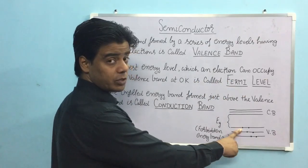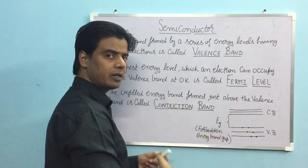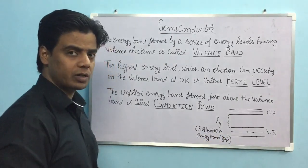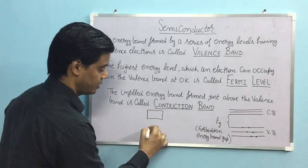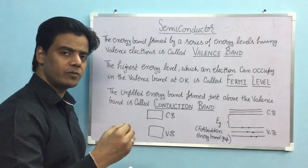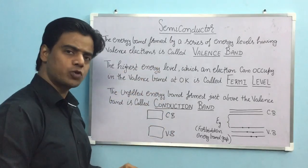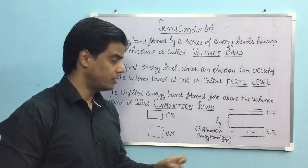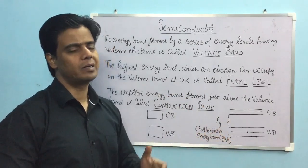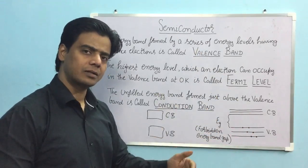If I increase the temperature, electrons gain energy and jump into the conduction band. Once in the conduction band, they become totally free and conduct electricity. Depending on the value of the forbidden energy band gap, a solid behaves as conductor, insulator, or semiconductor. In conductors, the energy band gap is very small — in some metals, the valence band and conduction band may overlap. In insulators, the band gap is huge, generally greater than 3 electron volts.